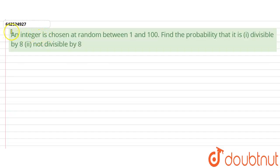Hello everyone, let's start this question. This question says that an integer is chosen at random between 1 and 100. We need to find the probability that it is case 1, divisible by 8, and case 2, not divisible by 8.